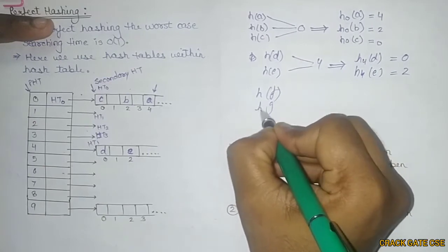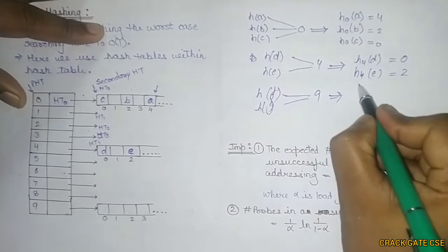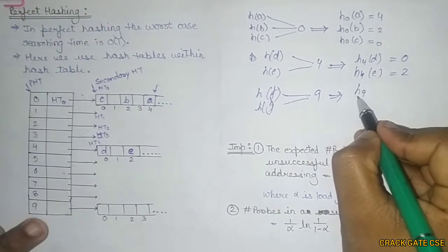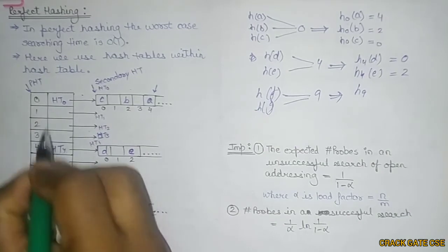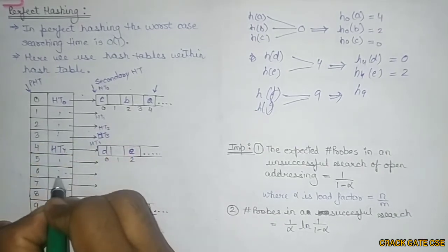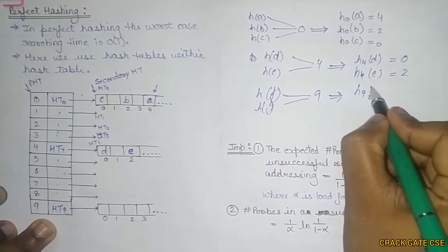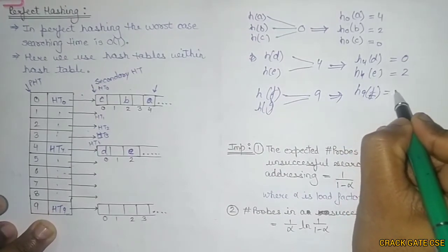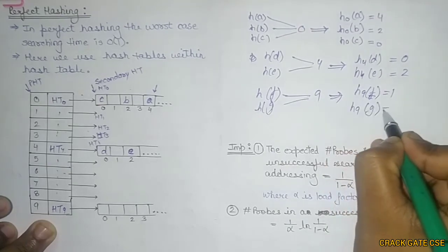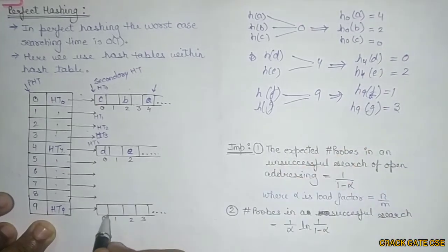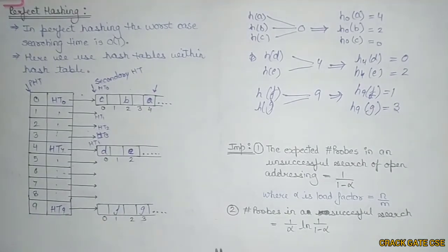h(F) and h(G) - let's say they are getting 9, so there's a collision. We'll be moving to the 9th hash table, hash table 9, hash table 4, and their respective values here also. h9(F) - let's say I'm getting 1. h9(G) - let's say I'm getting 3. That means F will be here and G will be here. In this particular manner, the collision will be resolved in perfect hashing.